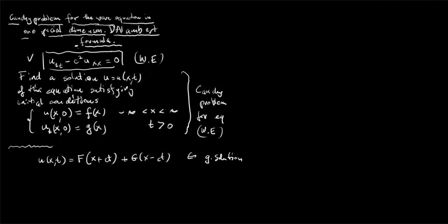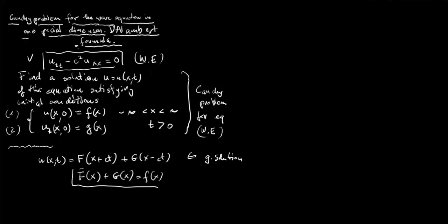Now we want to find a solution satisfying conditions 1 and 2. Condition 1 tells us that functions capital F and capital G must satisfy a certain equation — call it condition 1 prime. Taking the time derivative and evaluating at t equals 0, we get that u_t(x, 0) equals c times F prime of x minus c times G prime of x.